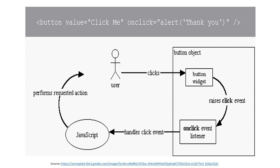Here we have an example in which a user clicks an object such as a button. The button object is the button widget. It raises a click event. The onclick event listener receives the command and handles the click event, going to the JavaScript which performs the requested action. In the code, button value equals 'click me', and the onclick command triggers an alert with the value 'thank you'.